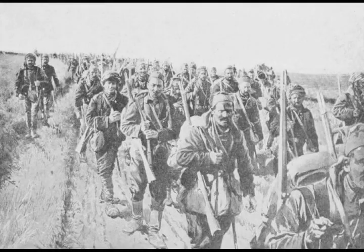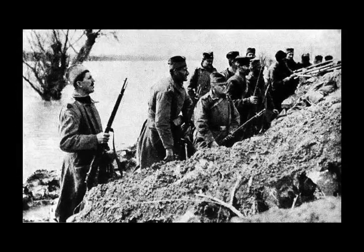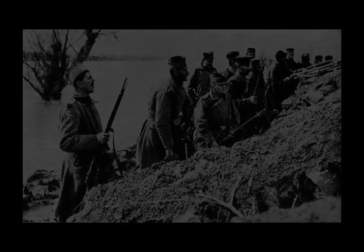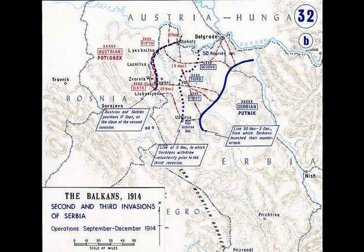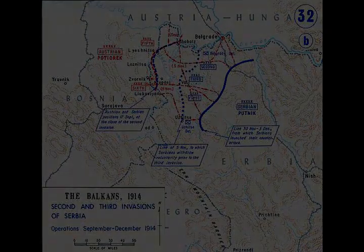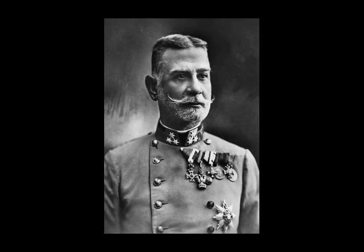The Austro-Hungarian government made the ultimatum intentionally unacceptable to Serbia, and it was indeed rejected. The Austro-Hungarians declared war on Serbia on 28 July, and that same day the Serbs destroyed all bridges on the Sava and Danube rivers to prevent the Austro-Hungarians from using them during any future invasion. Belgrade was shelled the following day, marking the beginning of World War I. Fighting in Eastern Europe began with the first Austro-Hungarian invasion of Serbia in early August 1914, under the command of Oskar Potiorek.